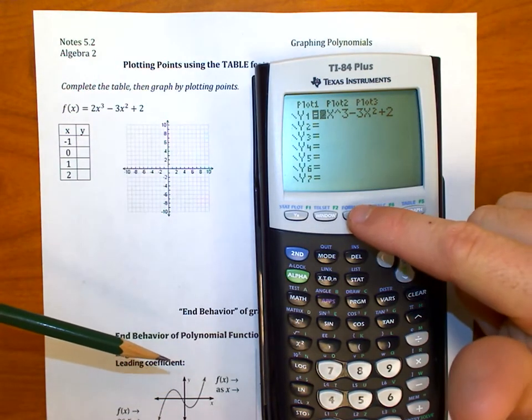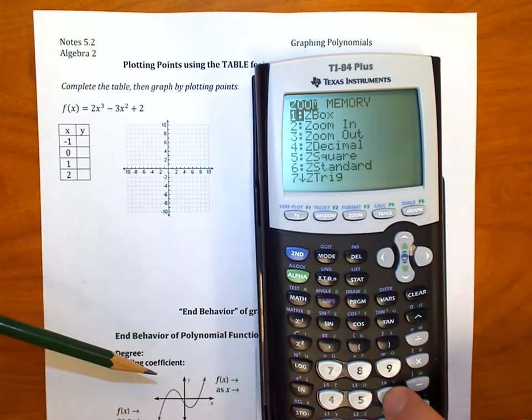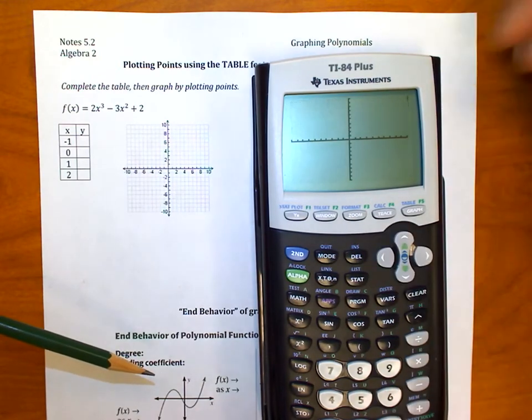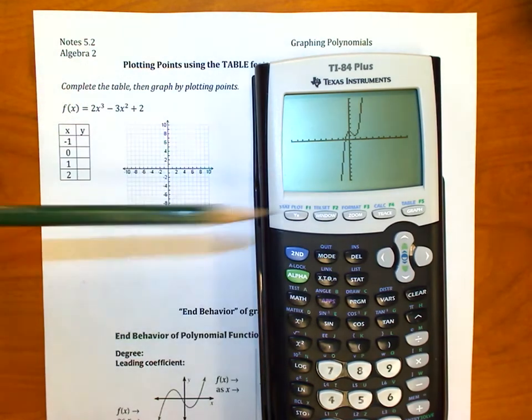Now, if I go and I graph that using the standard zoom window, that would be zoom, and then option 6, which is the standard zoom window, it's going to give me what looks like an s-curve. And that's fine. That's an x-cubed graph. Every cubic graph that we talk about is going to look a little bit like an s-curve.